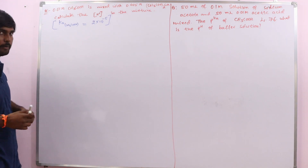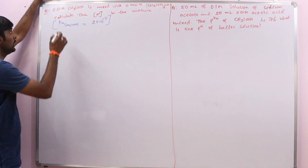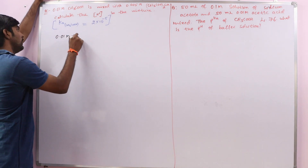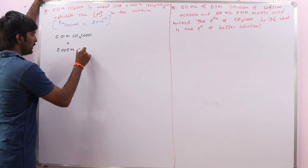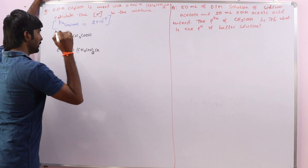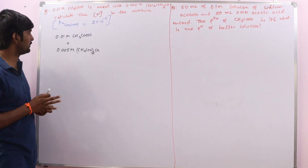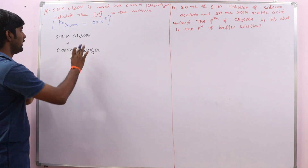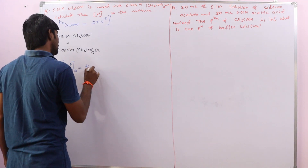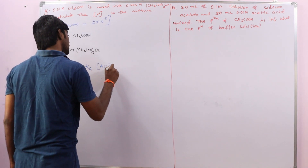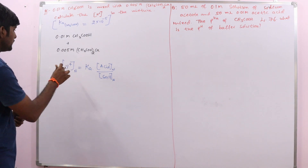First we have to identify which type of solution this mixture is. We have mixed 0.01 molar acetic acid with 0.005 molar calcium acetate. Calcium acetate is the salt of the same weak acid with a strong base, so this acts as an acidic buffer. For an acidic buffer, the formula to calculate H⁺ ion concentration is: H⁺ = Ka × (concentration of acid) / (concentration of salt).